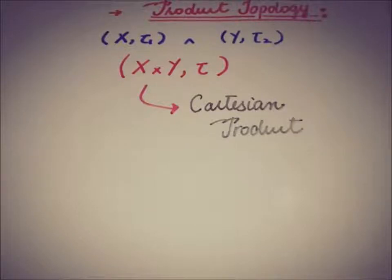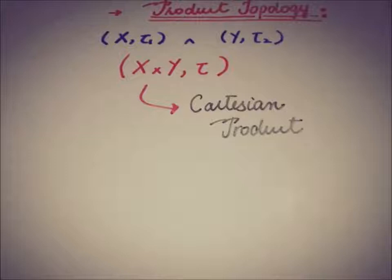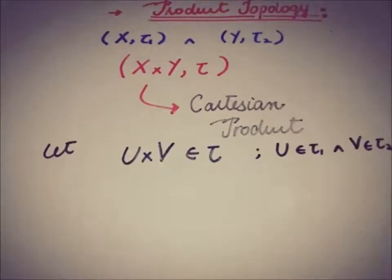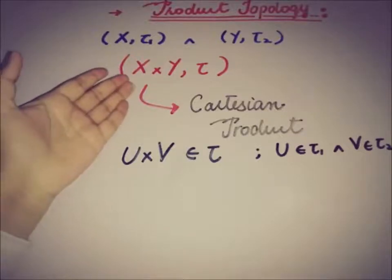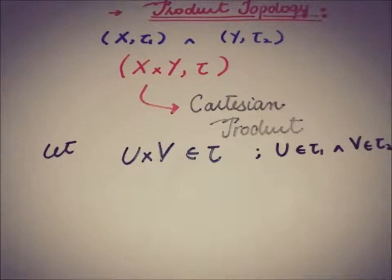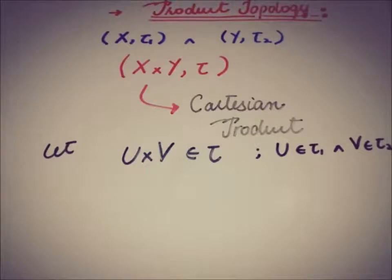Now there is a question about the open sets of this product topology, or in other words, what about the base for this product topology. So let's take open sets from this X cross Y Cartesian product. So U cross V belongs to that topology tau, meaning U cross V is an open set of the product topology, where U is an open set of X belonging to tau1 and V belongs to tau2 as an open set of Y.